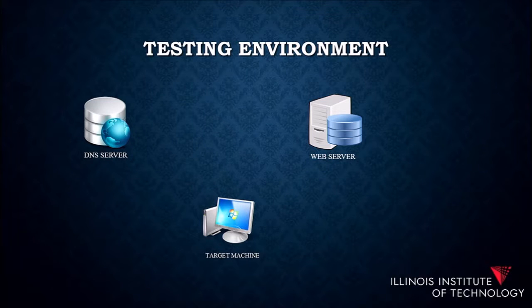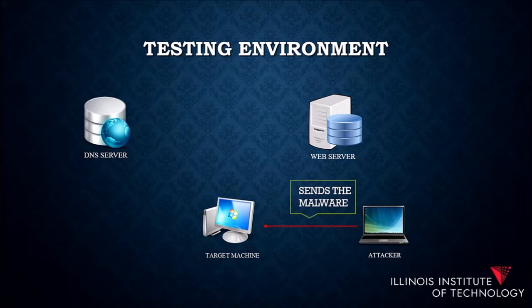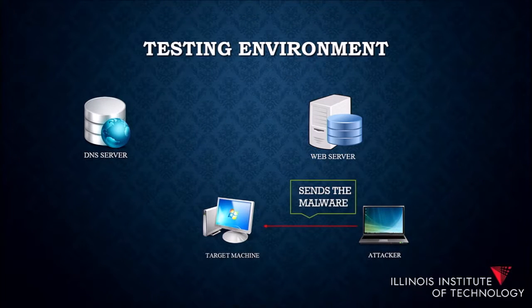For our project, in the first phase we had a basic testing environment made up of a target machine running Windows 7 — we chose to explore Windows 7 — a web server hosting a website, and a DNS server, which is the key to the whole process. Later on, we used Kali Linux to send malware into the target machine. Kali Linux is an operating system with the sole purpose of exploring vulnerabilities in other operating systems.